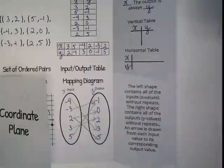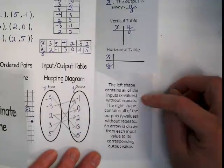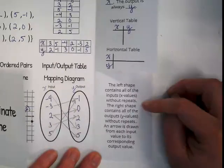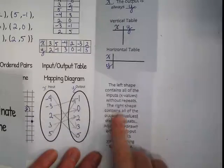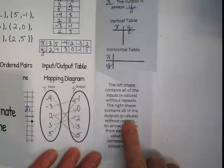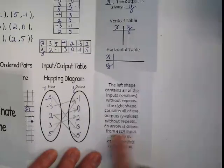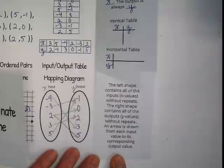So, now that you guys have made it, I want us to read the description because I think it doesn't make sense until you've seen what it's talking about. The left shape contains all of the inputs or X values without repeats. That means we only put the digit in there one time, even if it's used more than once. The right shape contains all of the outputs or Y values without repeats. An arrow is drawn from each input value to its corresponding output value.